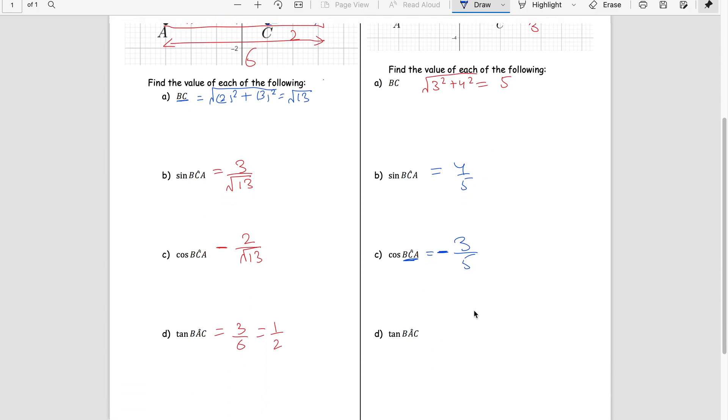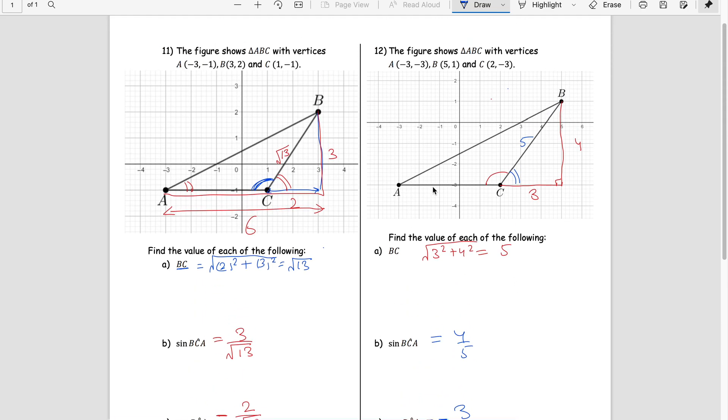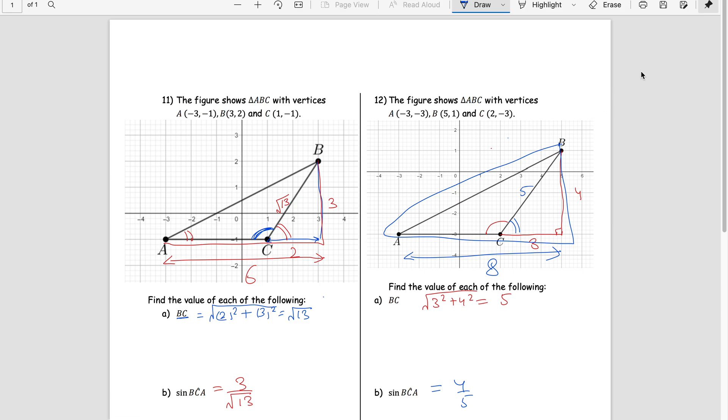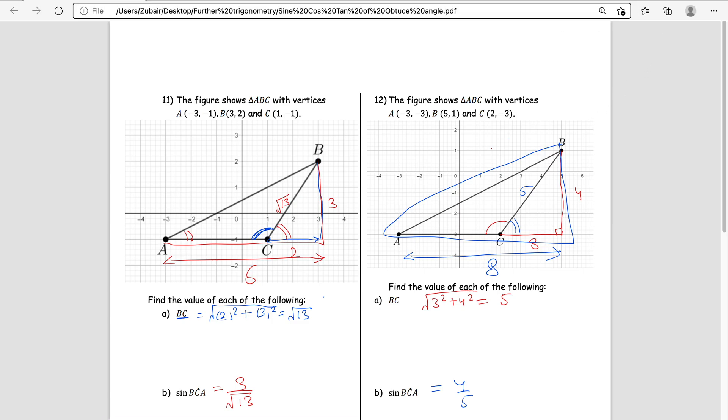Then tan BAC. Tan BAC, again it is this complete triangle making a base off from minus 3 to 5. This length is 8 and the vertical height is 4, so that is perpendicular over base, which reduces to one by two. Thank you so much, take care, Allah Hafiz.